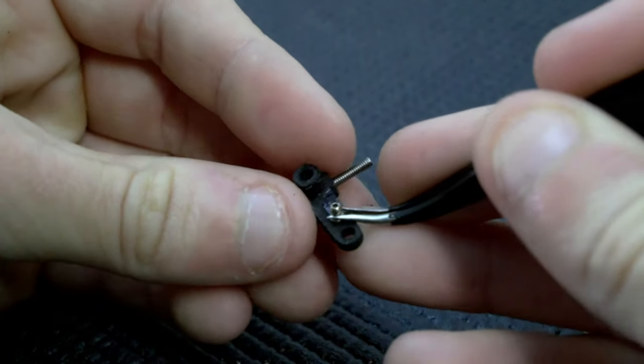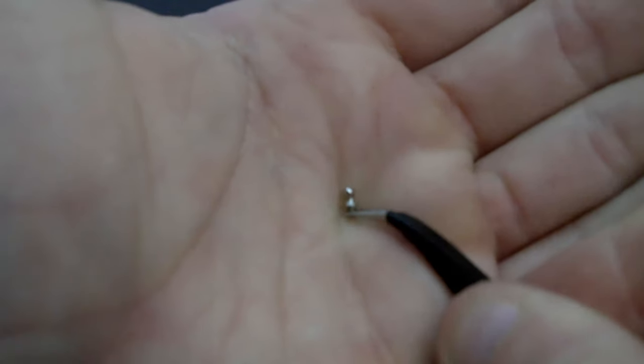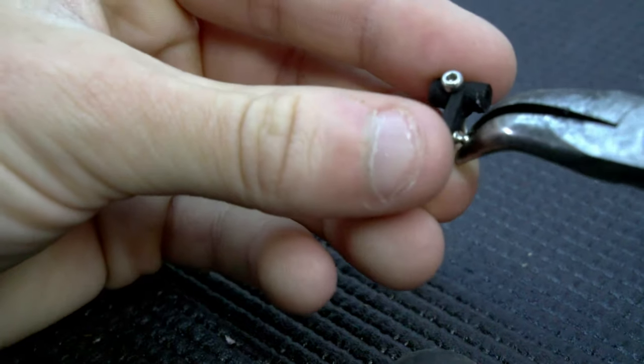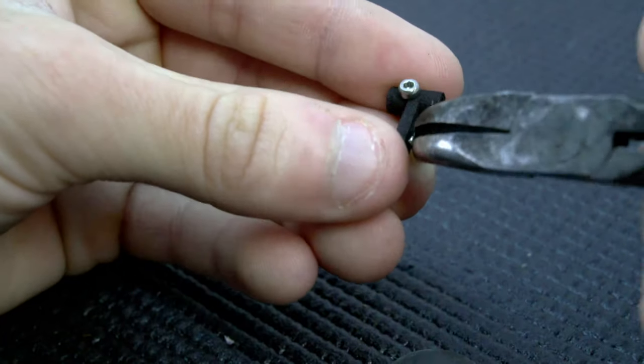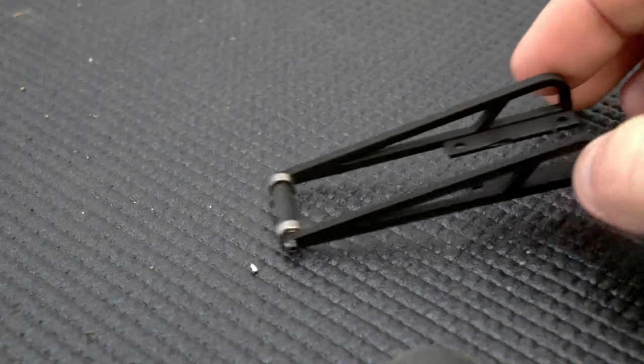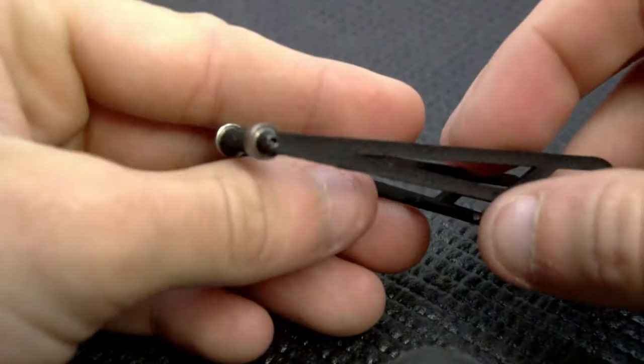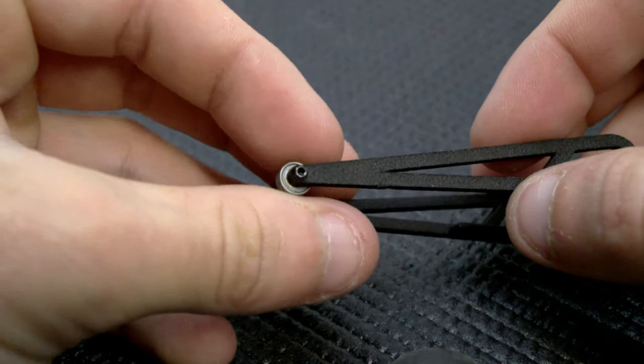You'll also need two micro ball studs, one for the servo and one for the right steering block. These are from an Orlandu Hunter kit. They are pretty tricky to screw in if you don't have the right size hex driver.